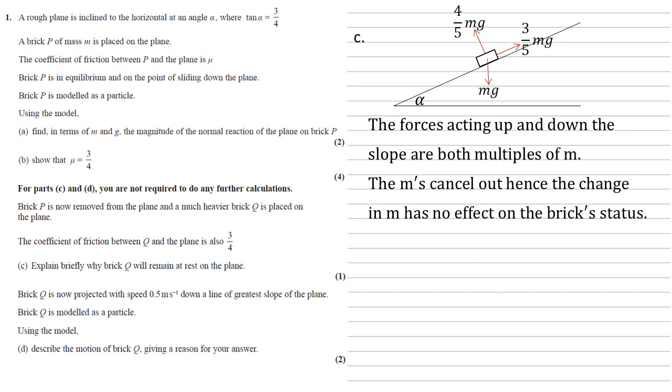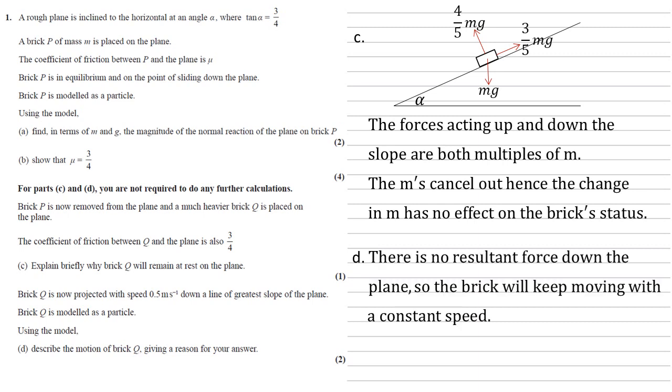So now brick q is projected with speed 0.5 meters per second down a line of greater slope of the plane. Brick q is still modelled as a particle. Using the model for part d, we need to describe the motion of brick q, giving a reason for our answer.